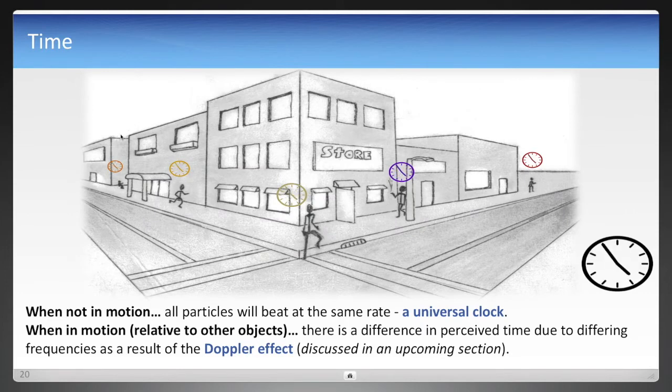But yet we know that time is relative, when in motion at least. And so what this states is that there is a universal clock, and it's based on the standard longitudinal wave that passes through everything. But when something is in motion, its wavelength changes, and it's a property known as the Doppler effect. And so that is the basis of relativity, and we'll discuss that later.